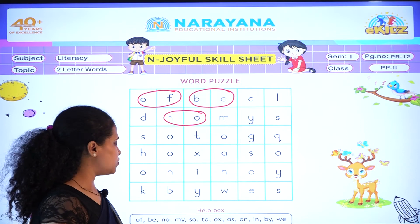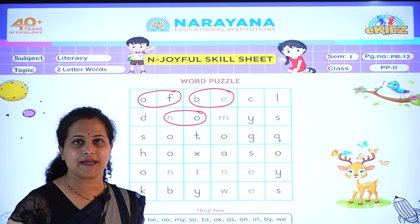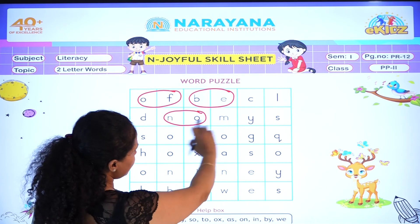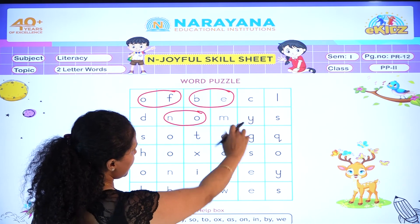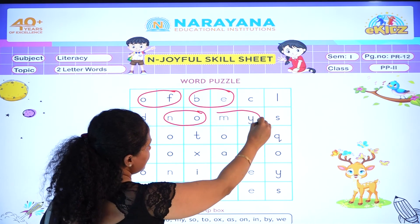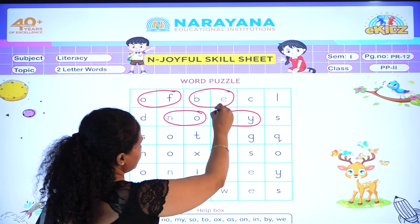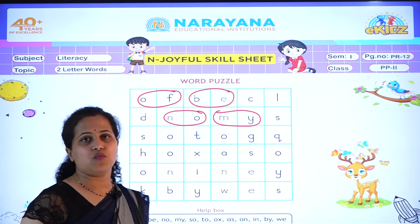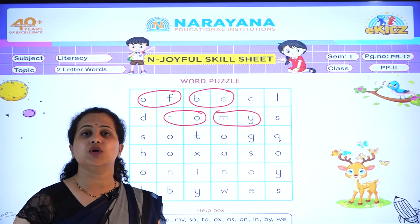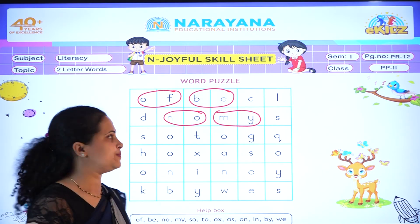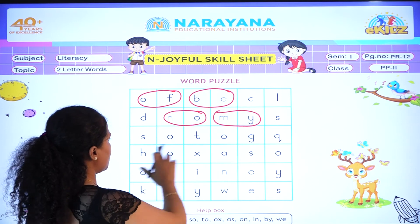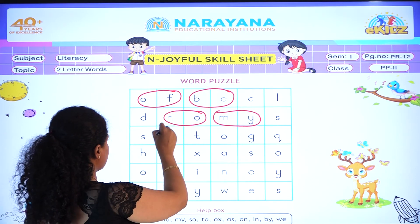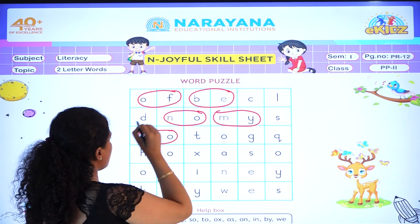Next word is 'my'. Where is 'my'? Here is 'my'. Circle it. Well done. Now next word is 'so'. S-O. Here is 'so'. S-O. So.